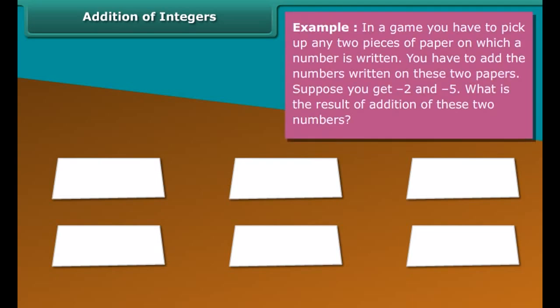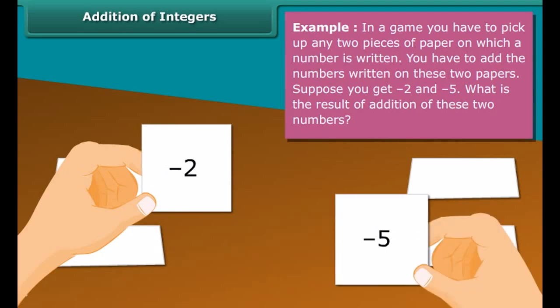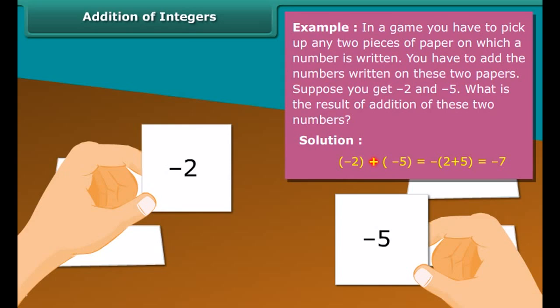In a game you have to pick up any two pieces of paper on which a number is written. You have to add the numbers written on these two papers. Suppose you get minus 2 and minus 5. What is the result of addition of these two numbers? Minus 2 plus minus 5 equals minus 7.